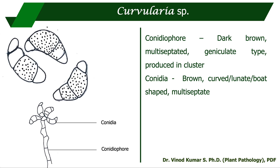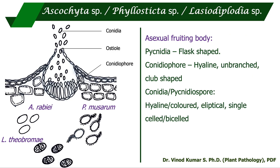Curvularia also causes leaf spot similar to Cercospora. The conidiophore is the same type: dark brown, multiseptate, geniculate, and produced in clusters. The conidia are brown, curved, lunate or boat-shaped, and multiseptate.